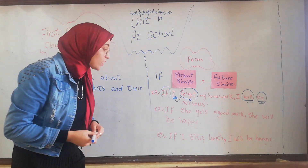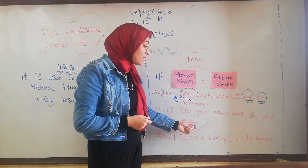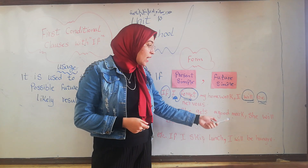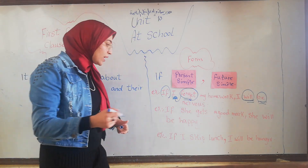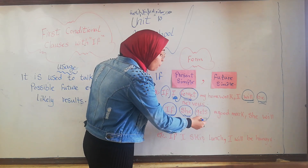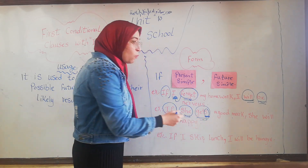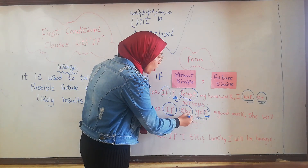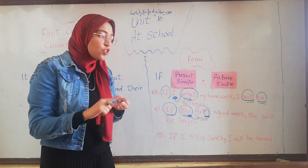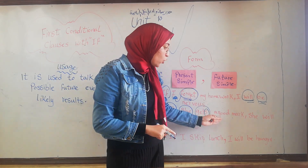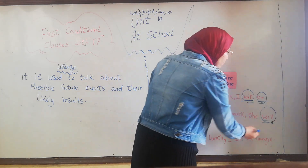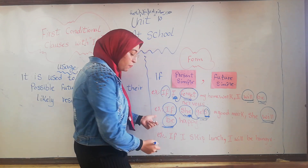Another example: if she gets a good mark, she will be happy. After if, we put she, then the verb gets with an S — because the subject is he, she, or it. In the second clause, we put will + verb in its base form — be.